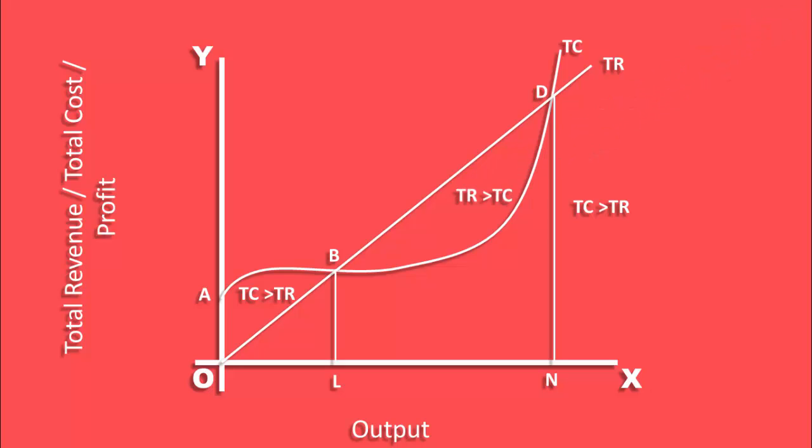The firm will operate in the region LN. Only in this range, total revenue is greater than total cost. As he moves up from output L to N, the difference between total revenue and total cost widens and then becomes narrow.